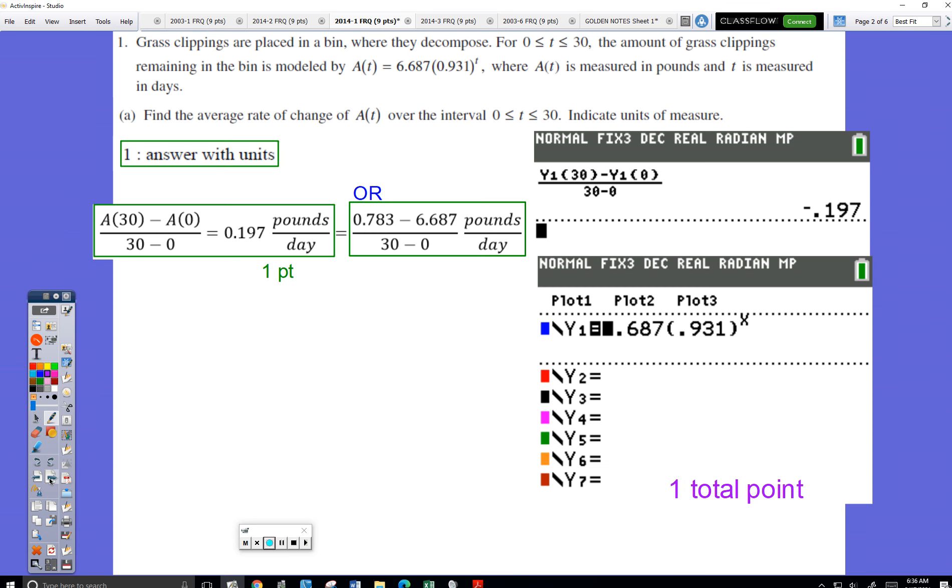So I go and find how much grass is in the bin on day thirty. It turned out to be 0.783 pounds, just using my calculator. I subtract from that how much is in the bin on day zero. So of course there was a lot more on day zero, 6.6 pounds, than there is on day thirty because the grass is decomposing.